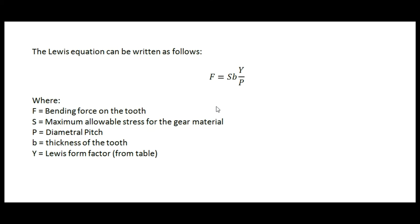Let me walk you through the Lewis equation and how it works. The Lewis equation says that the bending force imposed on the tooth by mating with the gear it's mating with is going to be equal to the allowable stress for the material — in this case aluminum — multiplied times the thickness of the tooth, which is the same as the thickness of the gear. That's multiplied times the Lewis form factor, which comes from a table I'll describe to you, divided by the diametral pitch.